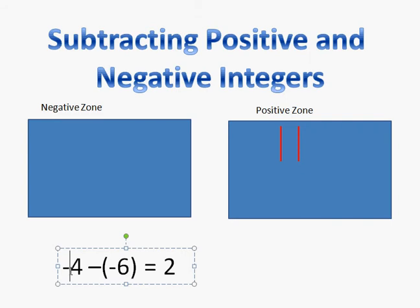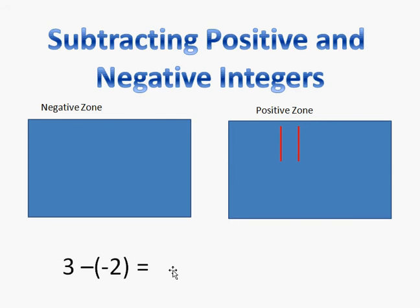So, let's say I start out with a positive 3 and I'm going to subtract a negative 2. Like I told you, if you subtract a negative number, you're basically just adding the number. So, 3 minus a negative 2 is the same as 3 plus 2. And you know that would equal 5, but I want to prove that. So, first, I'm going to put 3 in my positive zone because I'm starting out with a positive 3.